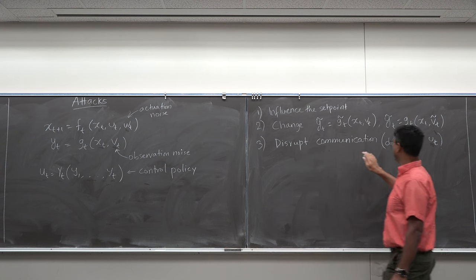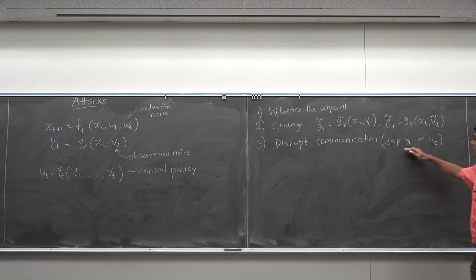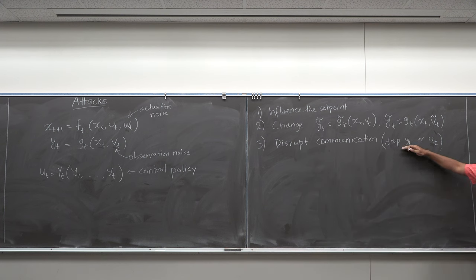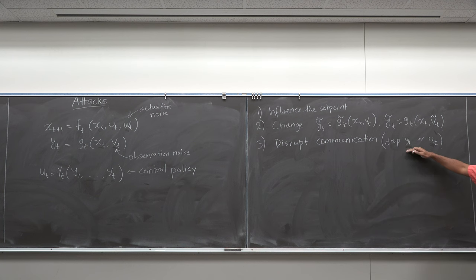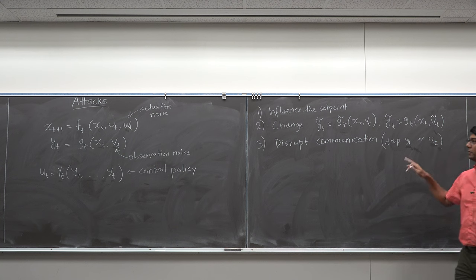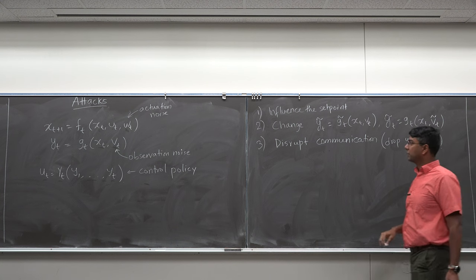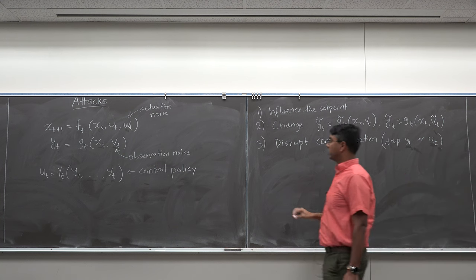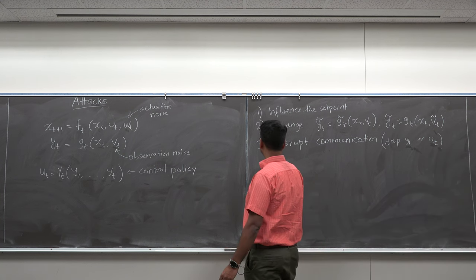Disrupting communication means the adversary can either drop yt — the observation being fed to the controller — or disrupt ut, dropping the control action so it does not get applied to the actuator.